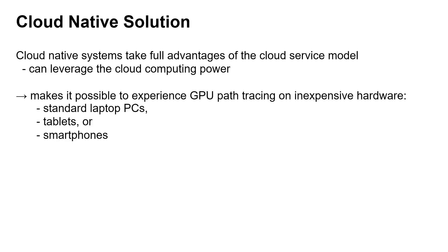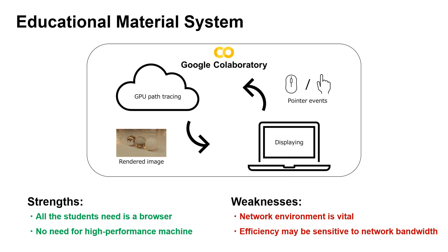Doing this makes it possible to experience GPU path tracing on inexpensive hardware, such as standard laptop PCs, tablets, or even smartphones. To construct a cloud-native system, we chose Google Colaboratory as our underlying development environment. Google Colaboratory, also known as Colab, is an interactive development environment provided by Google, and it has three remarkable features: zero configuration required, free access to GPUs, and easy sharing. By building educational material on Colab, students can easily experience GPU path tracing even on inexpensive hardware.